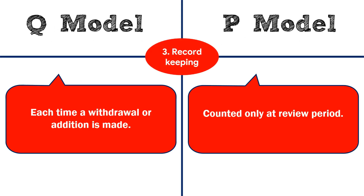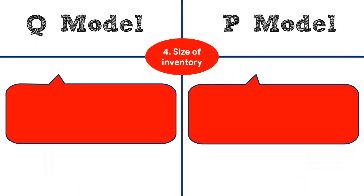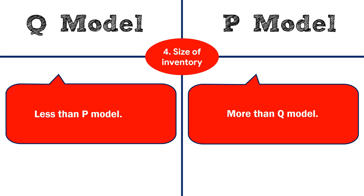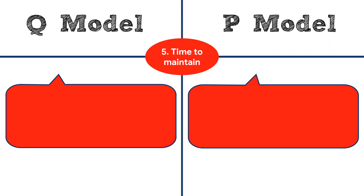Third, record keeping: in the Q model a record is kept each time a withdrawal or addition is made, whereas in the P model inventory is counted only at the review period. Fourth, size of inventory: in the Q model the size of inventory is less than in the P model, and in the P model the size of inventory is more than in the Q model.